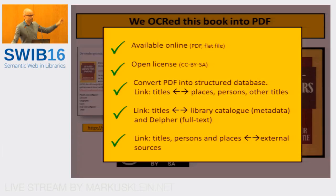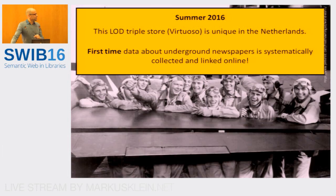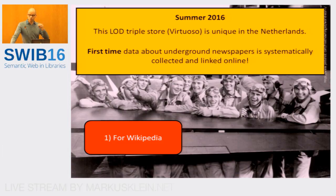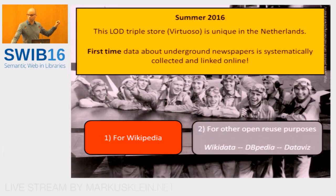The main outcome of Gerard's work is that those three challenges were resolved. We created a linked open database — a Virtuoso triple store — containing information about these underground newspapers. That was actually the first time it had been done in the Netherlands, which I found quite surprising given it's more than 70 years after the war. With the database, we could do two things: generate Wikipedia articles, which we already did, and in the future export it to Wikidata, DBpedia, or use it as a basis for data visualization.